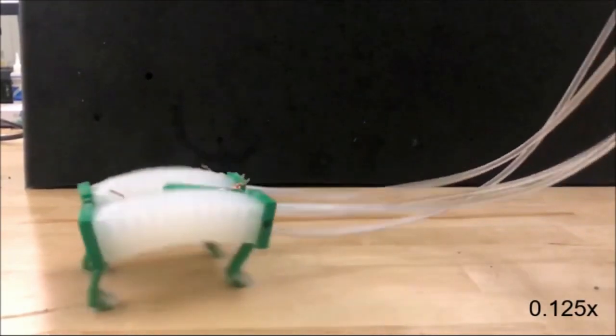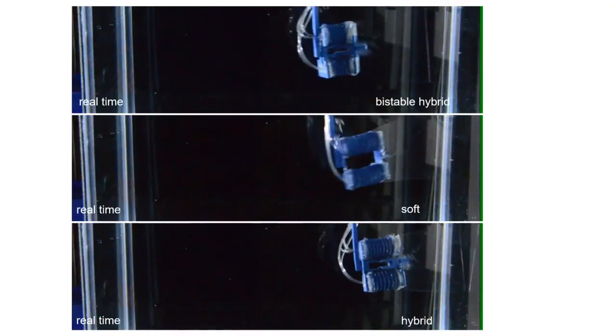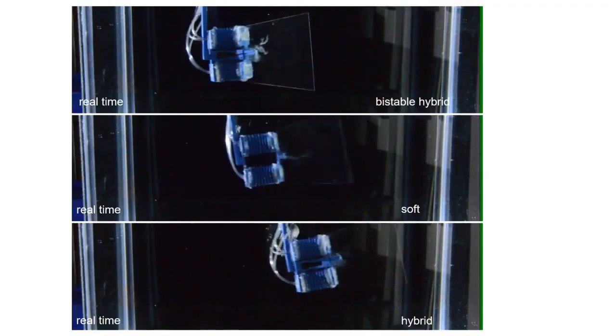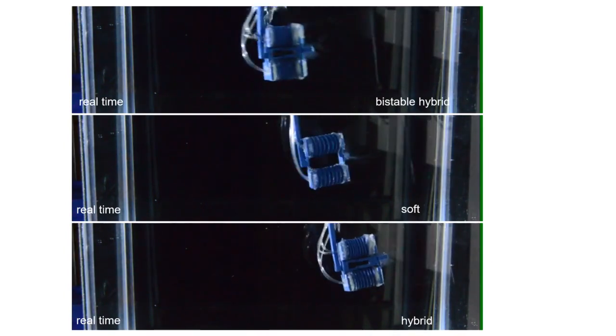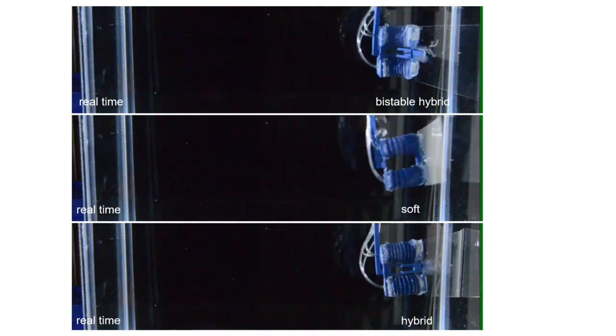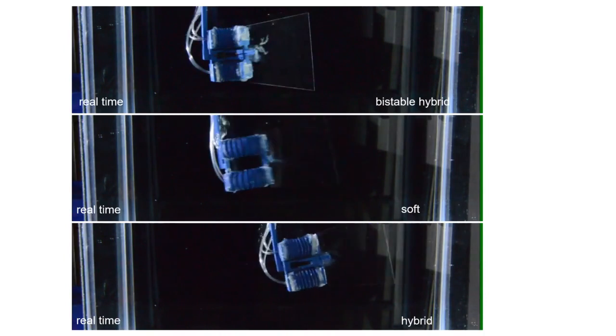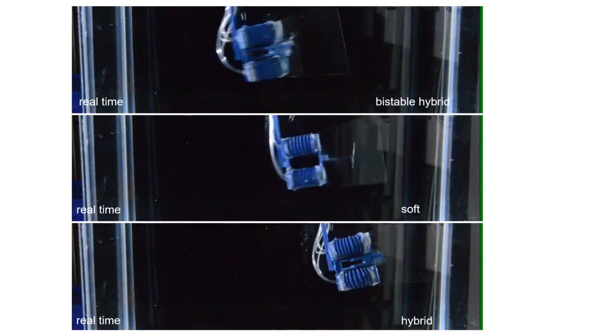The researchers also demonstrated that the LEAP design could improve swimming speeds for soft robots. Attaching a fin rather than feet, a LEAP robot was able to swim at a speed of 0.78 times body lengths per second, as compared to 0.7 times body lengths per second for the previous fastest swimming soft robot.